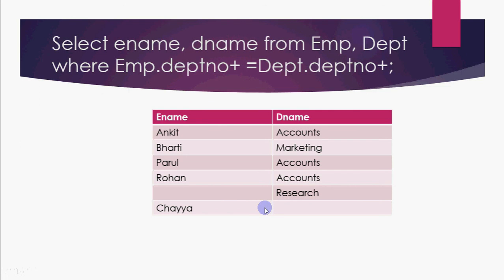The basic difference: inner join shows only matching records, whereas outer join shows the matching records plus the non-matching records from the specified table. We can also think of it in set terms: if two tables are set A and set B, inner join shows only the intersection — just the common elements. A complete outer join is like a union — it shows everything from both tables, including elements not shared between them.